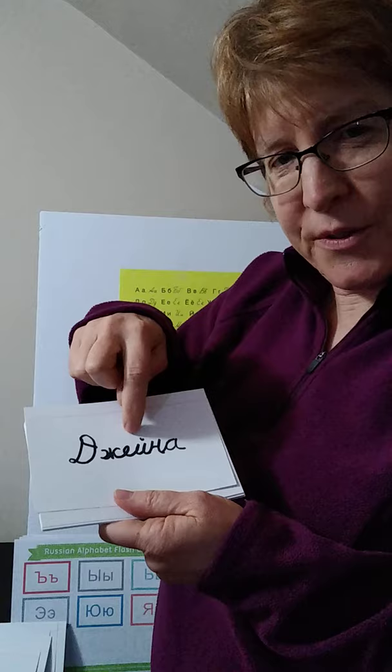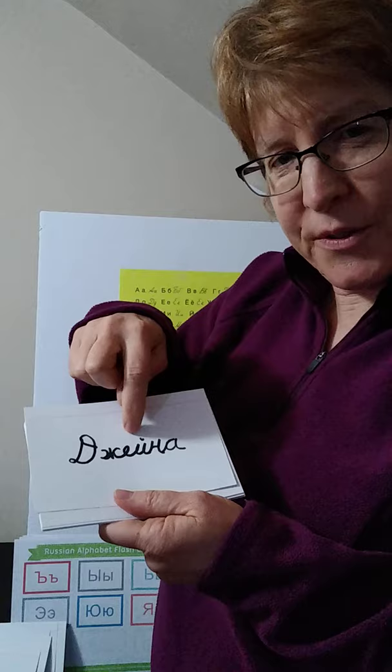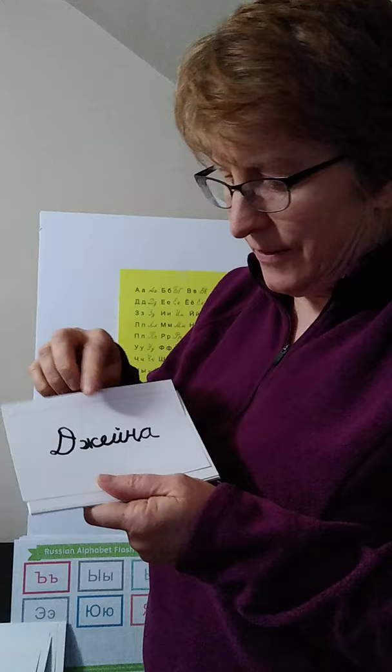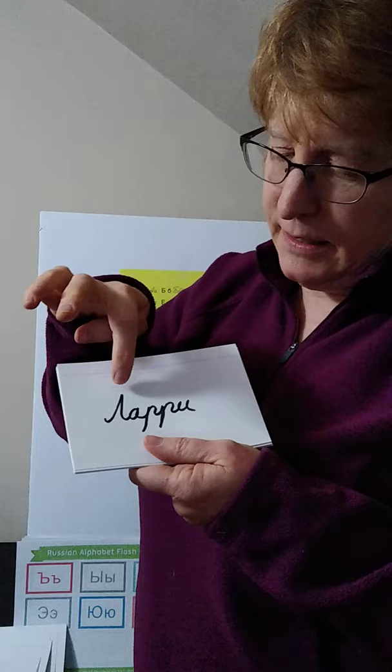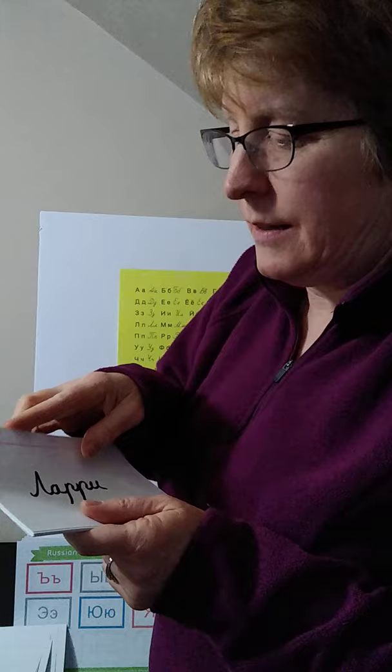Here is Jaina. There's a little mark — a kratka — to make the E a slightly different sound. And here is Lari. It's capital L; there are two of what look like P's, which are actually the R's.